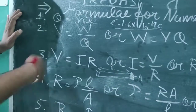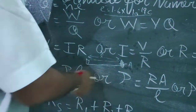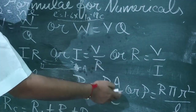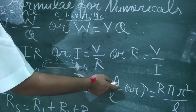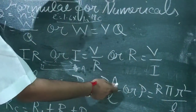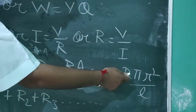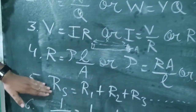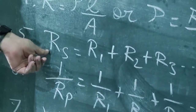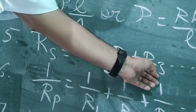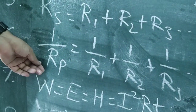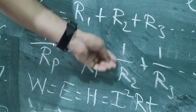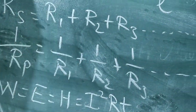In the place of area we can also write π r². With the help of this, we can also get the formula of resistivity: ρ = R × A / L. If we arrange resistances in series, the formula is Rs = R1 + R2 + R3. For parallel combination, the formula is 1/Rp = 1/R1 + 1/R2 + 1/R3.